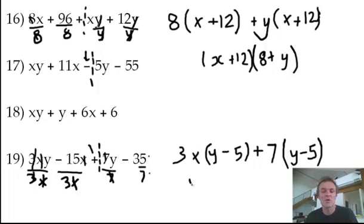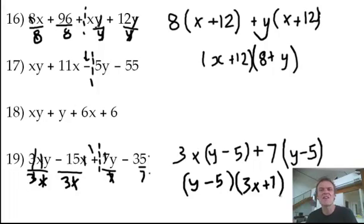Again, what's common to both? A y minus 5. That's what I'll factor out. And when I do, what's left? Very visual. Just the 3x plus 7. So we'll leave it there, and I'll do maybe some more trick ones in the next video. Alright, thank you.